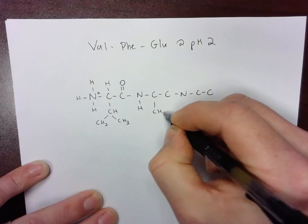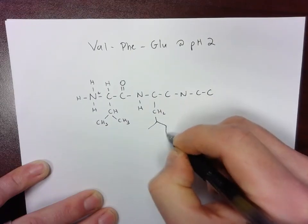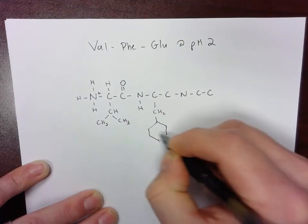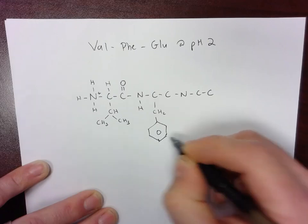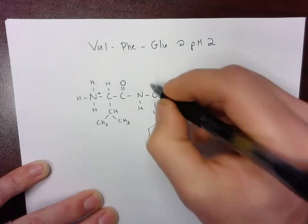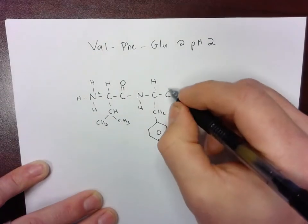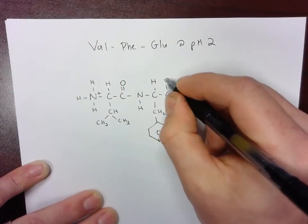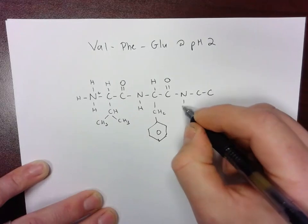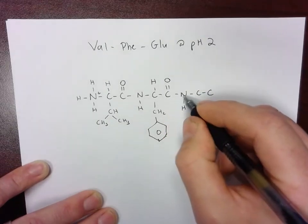Phenylalanine. The R group is a CH2 with an aromatic ring and a hydrogen. And then the next carbonyl to a nitrogen creating the second peptide bond.